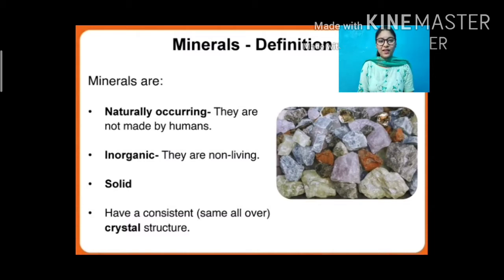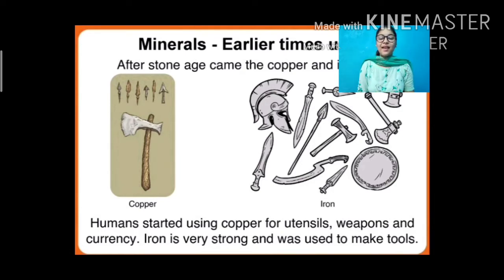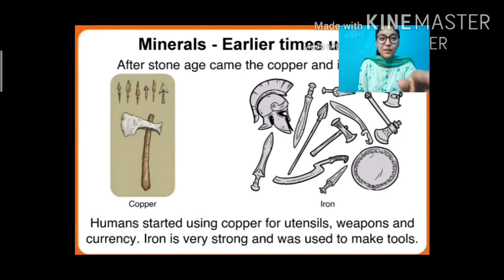Some minerals are solid and some minerals have a crystal structure. In earlier times, after the Stone Age came the Copper and the Iron Age. Humans started using copper for making utensils, weapons, and currency. Iron is a very strong mineral and was used to make tools — you can see all the tools in the picture — and the weapons made from copper, that also you can see.